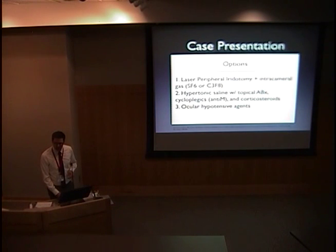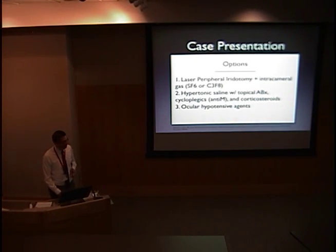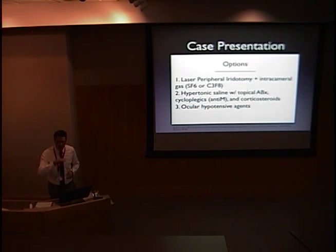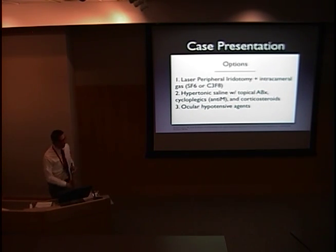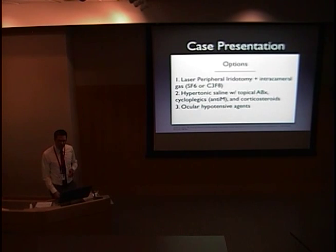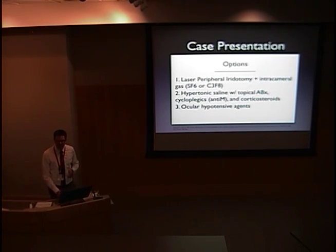Here are your options — these are not necessarily discrete; they can be used interchangeably or all in combination. Laser peripheral iridotomy in combination with intracameral gas will actually replace Descemet's membrane back onto the most inferior layers of the stroma, thereby preventing further development of edema and promoting regression. The iridotomy is there so that if the gas is displaced for whatever reason, that won't cause a glaucoma. Hypertonic saline can be used. Topical antibiotics are also used because there can be a traumatic association with eye rubbing in cases of hydrops, exacerbated keratoconus, cycloplegics, corticosteroids, as well as ocular hypotensives to decrease the fluid inside of the anterior chamber.